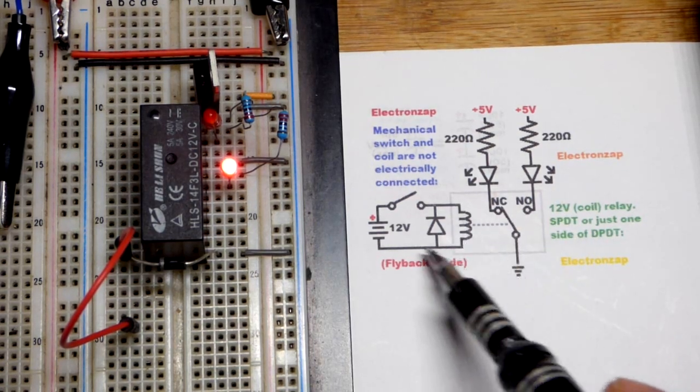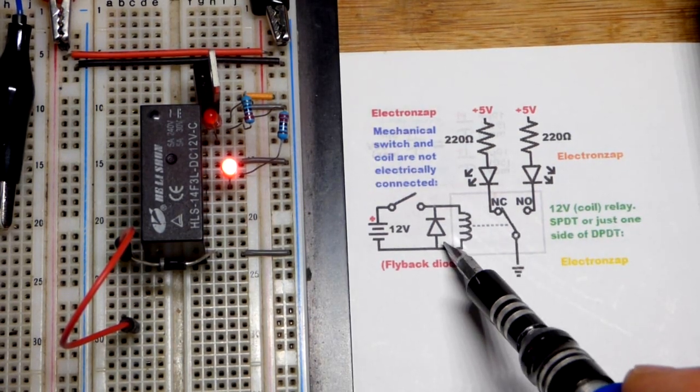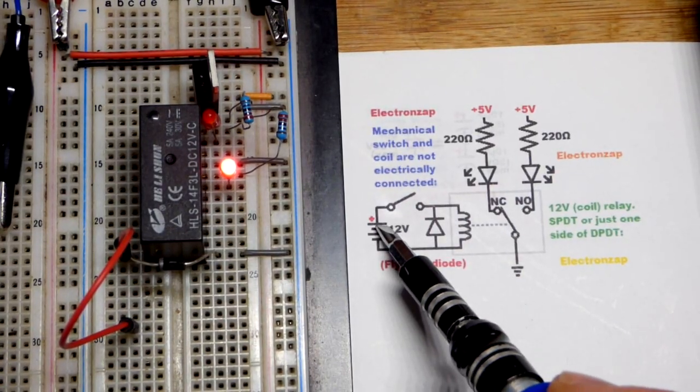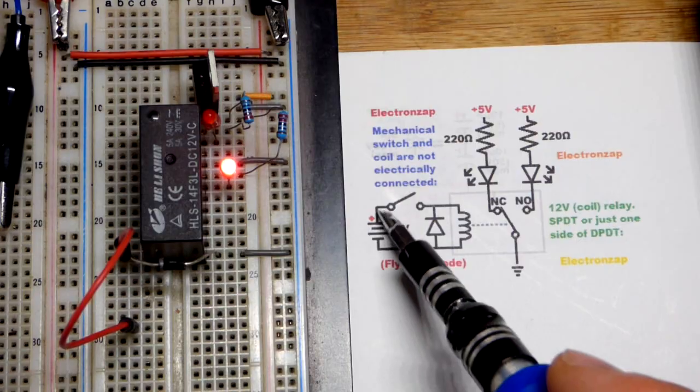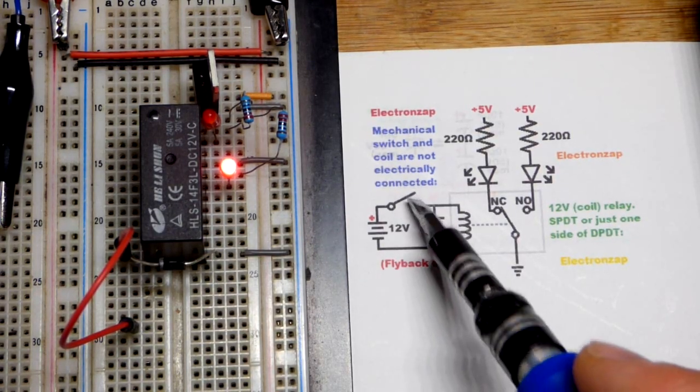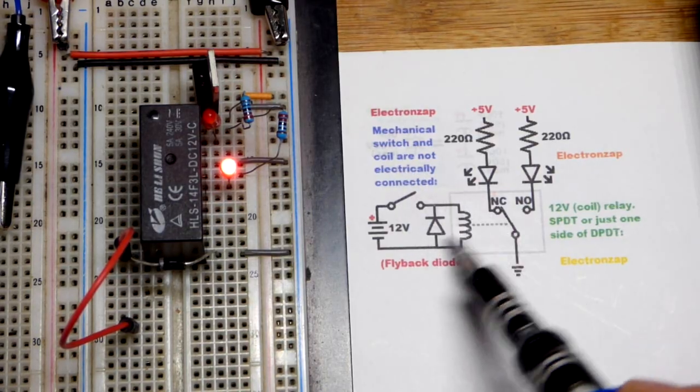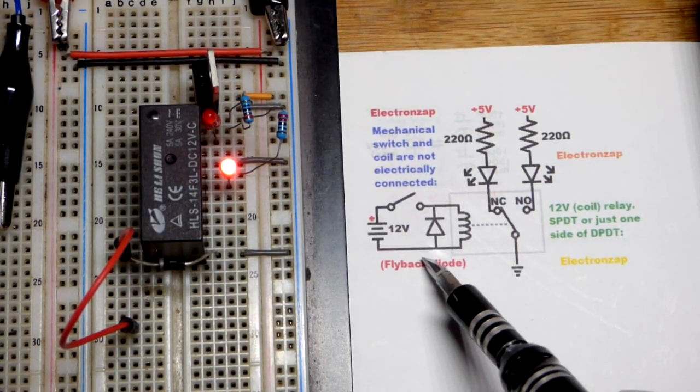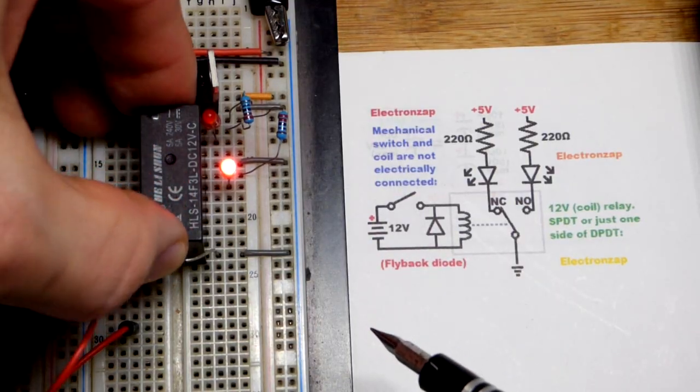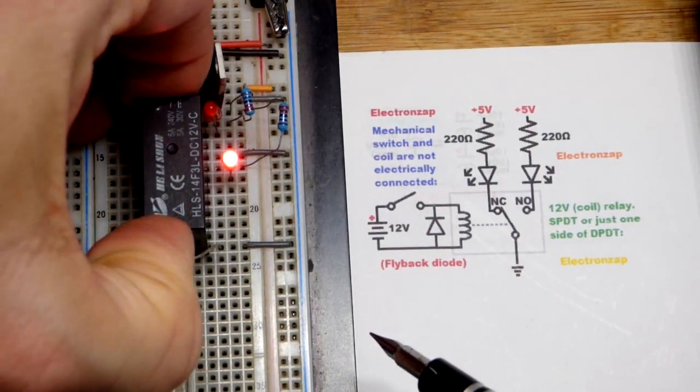Once it collapses and current stops flowing, the collapsing magnetic field is what keeps it flowing. This is reverse biased in terms of the power supply. So when you have the switch closed, no current goes into the diode. That way it has to go through the coil. But when you open the switch, then it can capture the current going that way through the inductor. So when I yank this, you'll see that LED turns off right there.